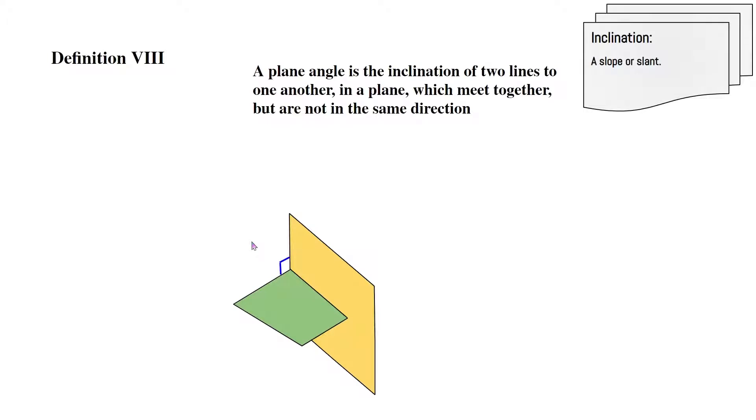Now definition 8. A plane angle is the inclination of two lines to one another, in a plane, which meet together, but are not in the same direction. Inclination means a slope or slant. So a plane angle, the blue angle right here, is the slope or slant of two lines to one another. It's the result of a slope or slant of two lines.